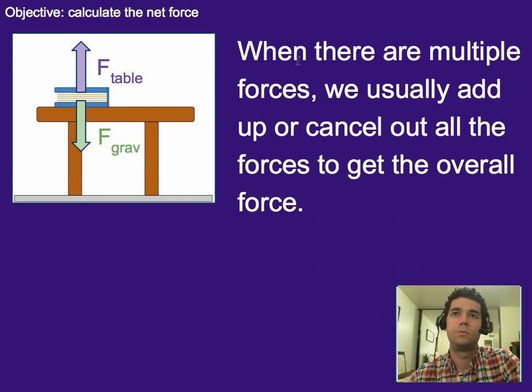Okay so when there are multiple forces on something we usually add them up or cancel them out to get a picture of what is the overall force on an object. For example we've got that the force due to gravity is equal to the force from the table so overall there's really no force on this book or they all cancel out if we look at kind of the big picture or net force.